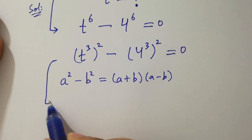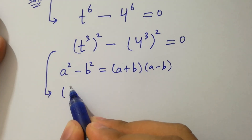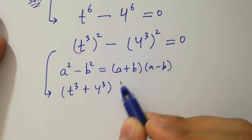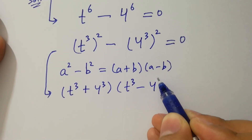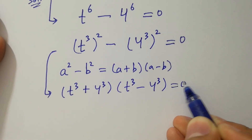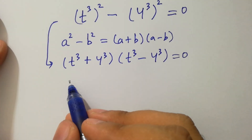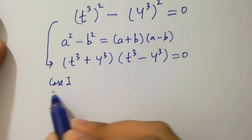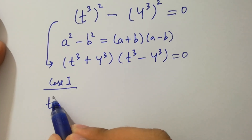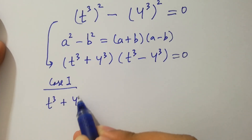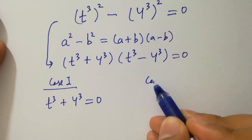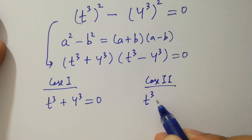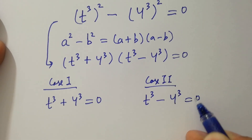Applying that formula, we have t cubed plus 4 cubed, times t cubed minus 4 cubed, equals 0. Next, we have two cases. Case one: t cubed plus 4 cubed equals 0. Case two: t cubed minus 4 cubed equals 0.